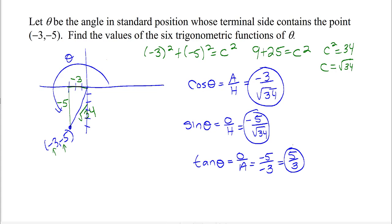The other three are reciprocal functions. The reciprocal function for cosine is secant, so sec θ will be the reciprocal of what cosine was. That's -√34/3.